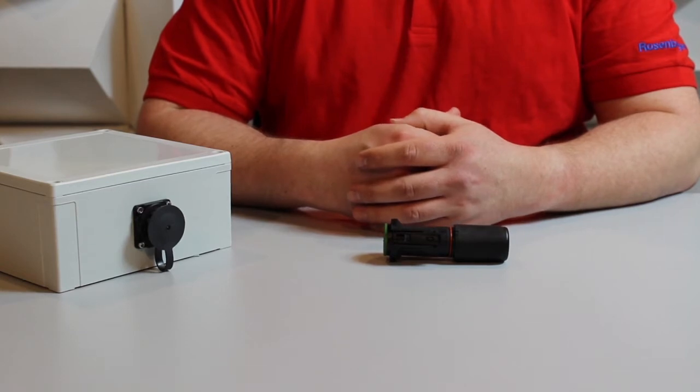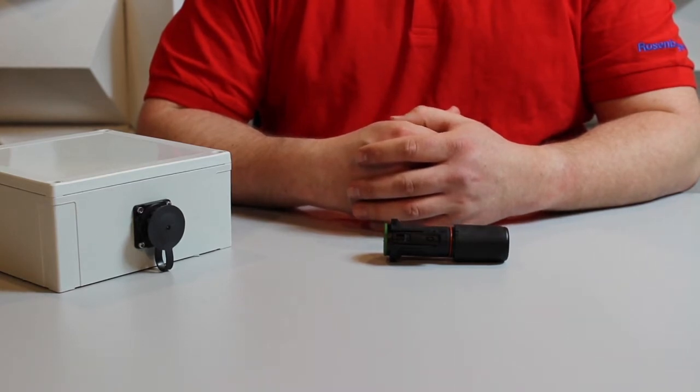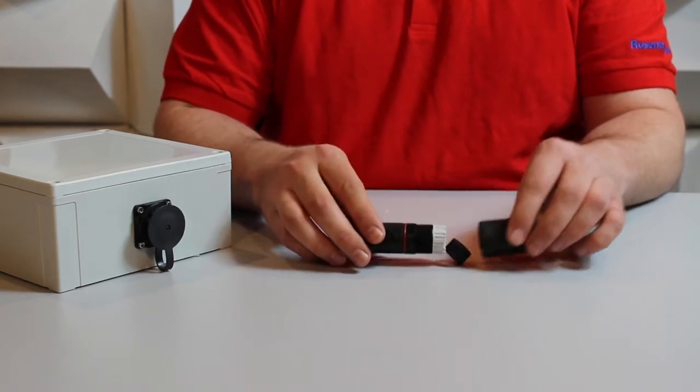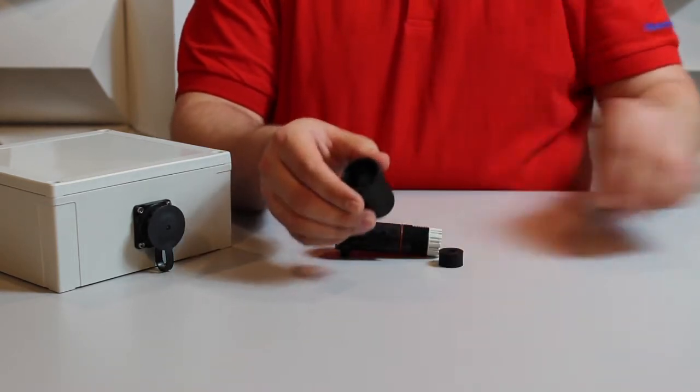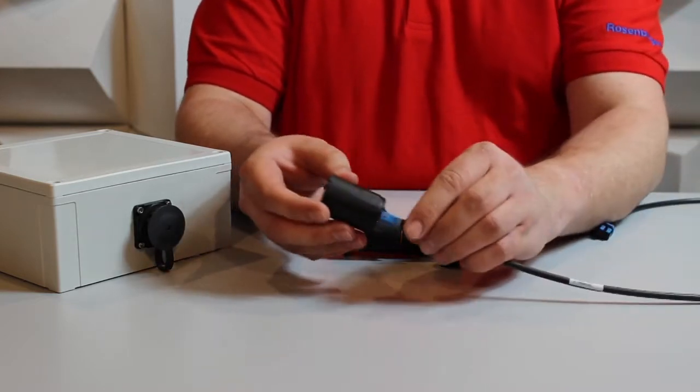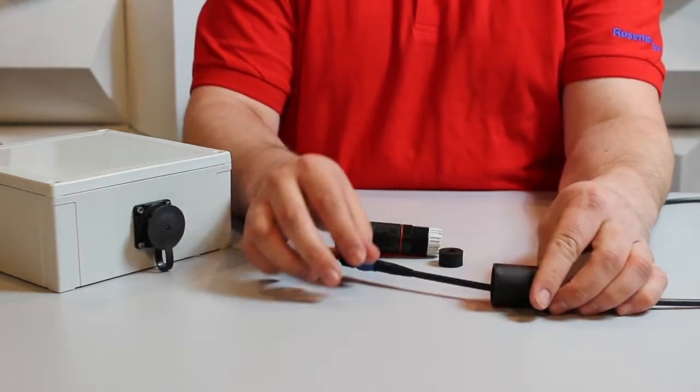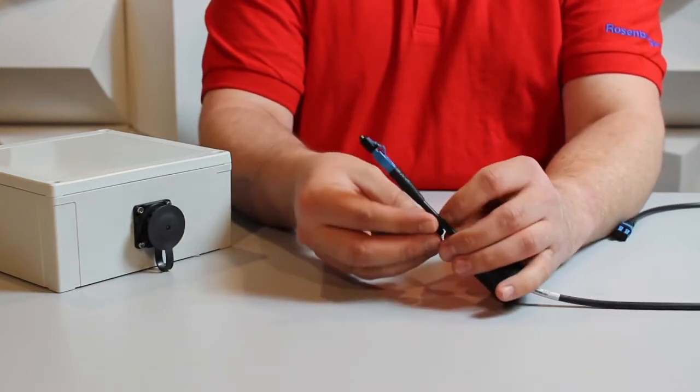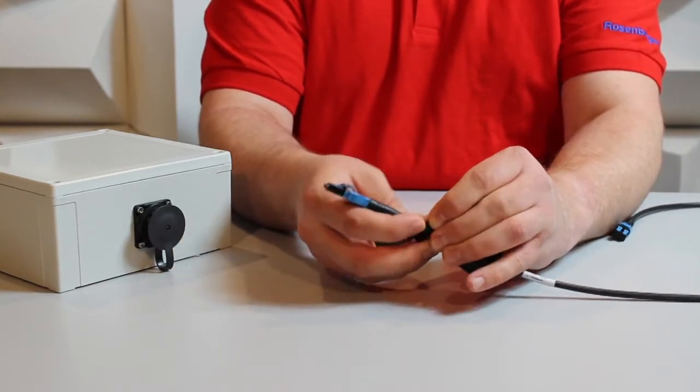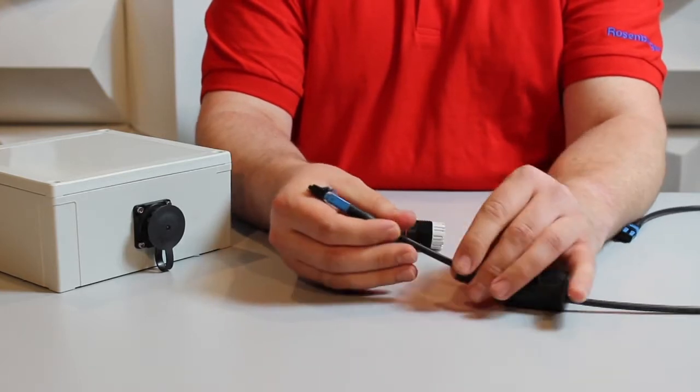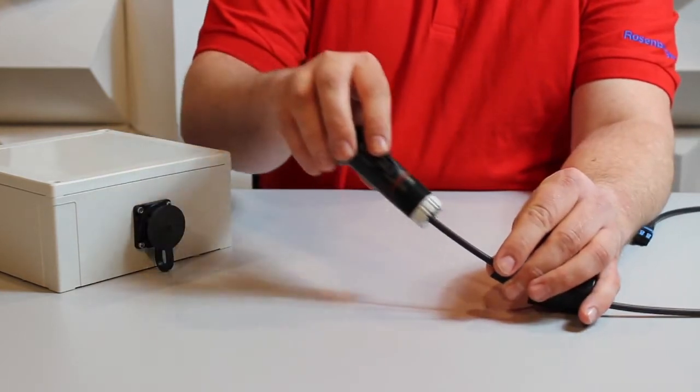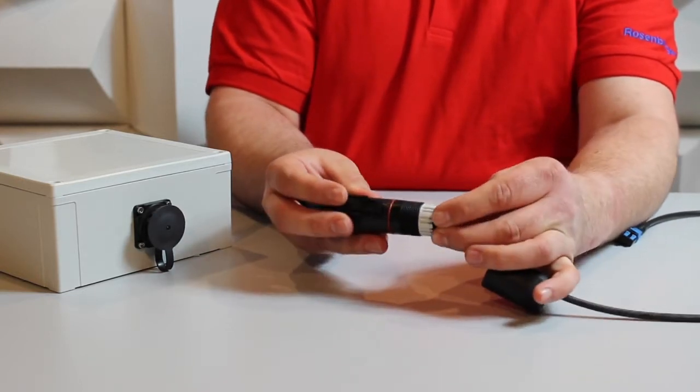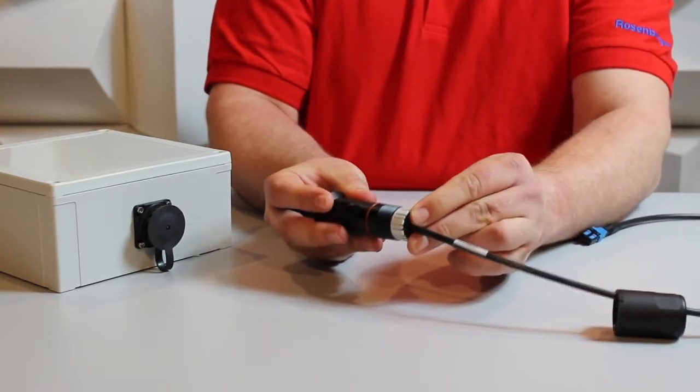So there are several easy steps and then our cable is protected using the Rosenberger Fiber Enclosure. Our first step is we want to place the back nut over our cable. We take the slotted grommet, it gets placed over the cable, slide the enclosure over and then the grommet goes into position.